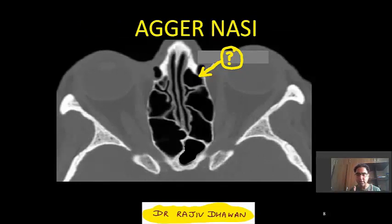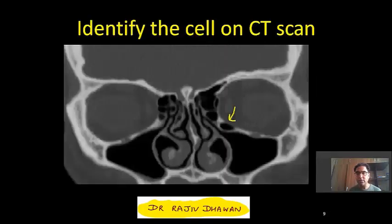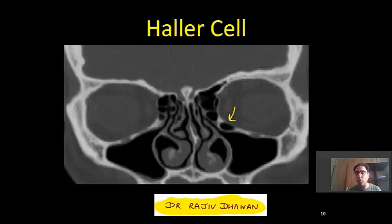Again, between the two orbits there is the ethmoid bone, and in it you are seeing many air cells. The most anterior cell of the anterior ethmoid air cell group is called agar nasi. Another choice was Haller cell. Haller cell is an anatomical variation — it is seen in some people only. It is a variation of the anterior ethmoid air cell group, and the location of the Haller cell is in the floor of the orbit.